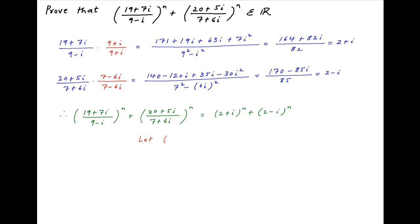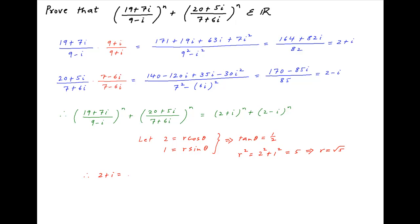Now, let 2 equal r cos theta and 1 equal r sin theta. Dividing the two equations, we get tan theta equal to half. Taking the square of both equations and adding, we get r square equal to 2 square plus 1 square, which is equal to 5, which implies r is equal to root 5. Therefore, 2 plus i equals root 5 times in brackets cos theta plus i sin theta, and 2 minus i equals root 5 times in brackets cos theta minus i sin theta, where tan theta is equal to half.